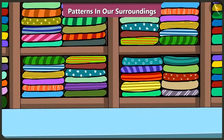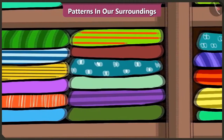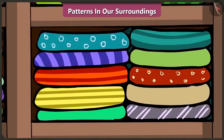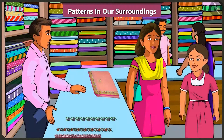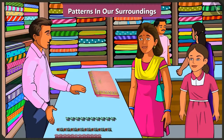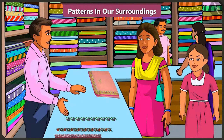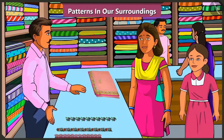All the clothes in the shop have some pattern on them — some shapes or designs have been repeated again and again. They select the patterned lace and ask the shopkeeper to use it on the saree. The shopkeeper says to collect the saree tomorrow. Thank you, brother.